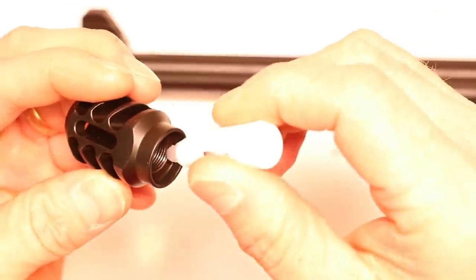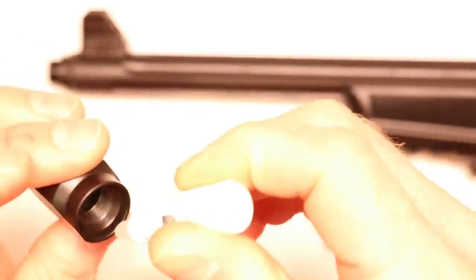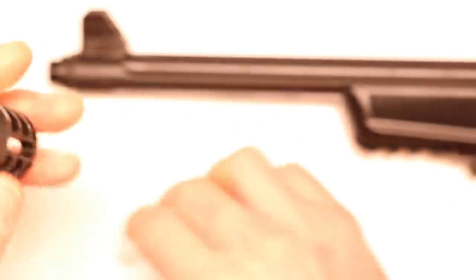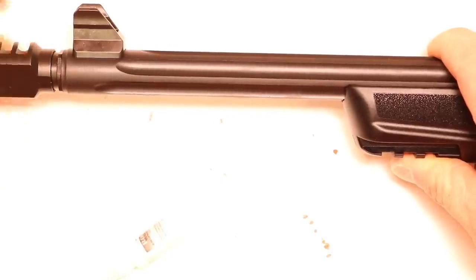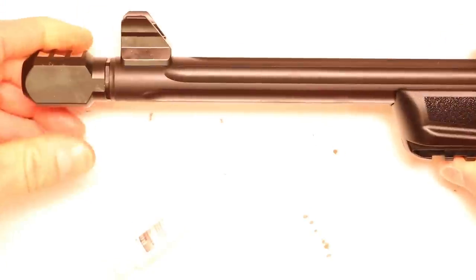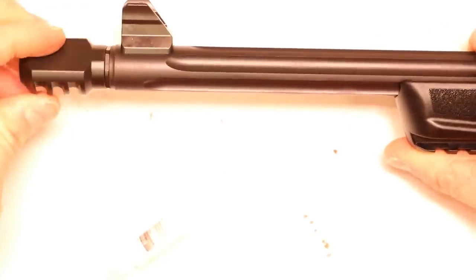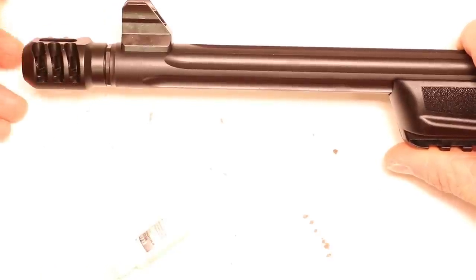And then we're going to take a little bit of Rocksett and put it inside the muzzle brake on the threads. Same deal, you know, just a dab every third of the way. Now we'll go ahead and tighten it on up. Okay, so it's good and tight. So now we back it off until it's completely level up top.